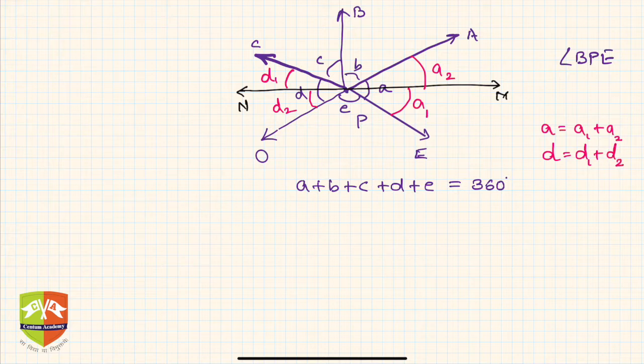Let's try to rewrite this statement. So hence this statement will become... it means a can be written as a1 plus a2 plus b plus c plus d1 plus d2 plus e.